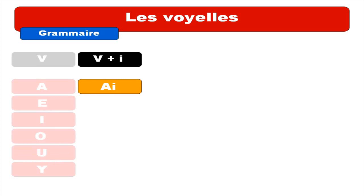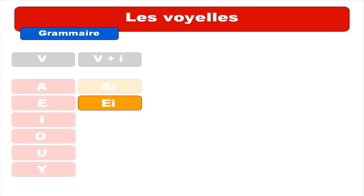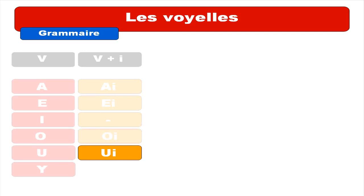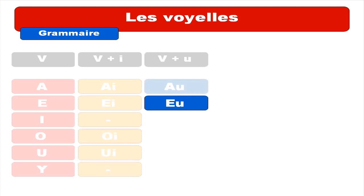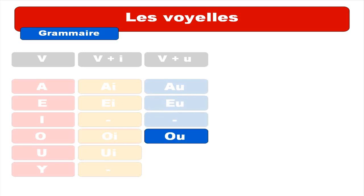Now let's see how they react when we combine them with I. In this case you will get the sound E — open E. Repeat. E. Same sound — E. Repeat. E. Here nothing, of course. OI — repeat. OI. OI — repeat. OI. Nothing, of course. OI.